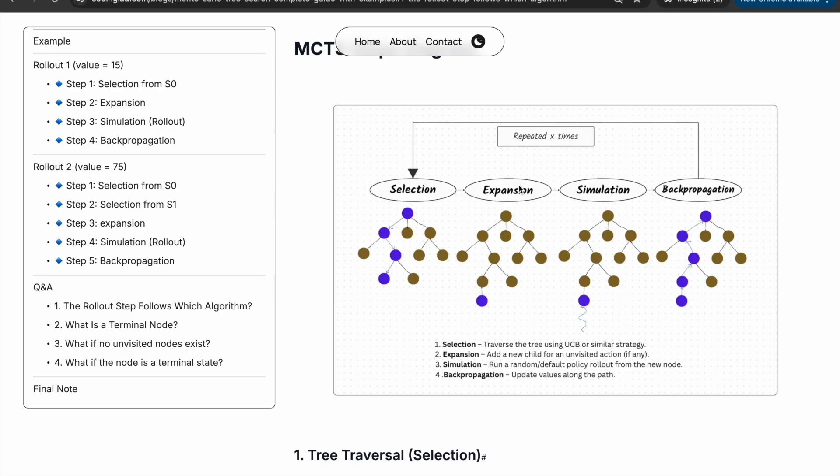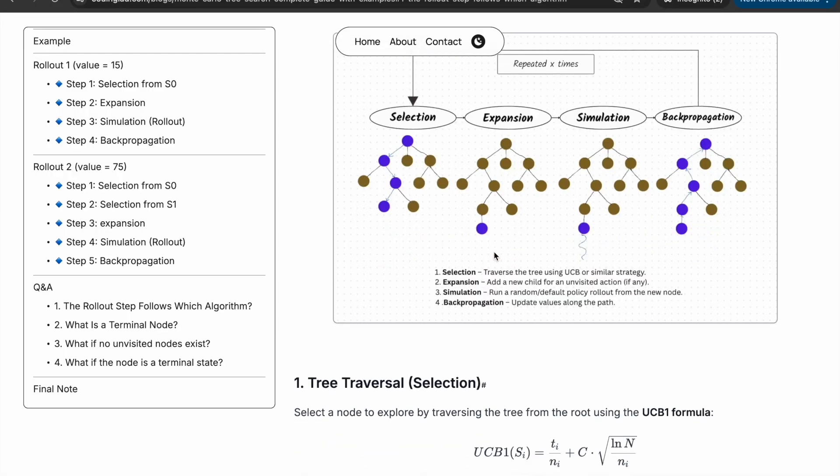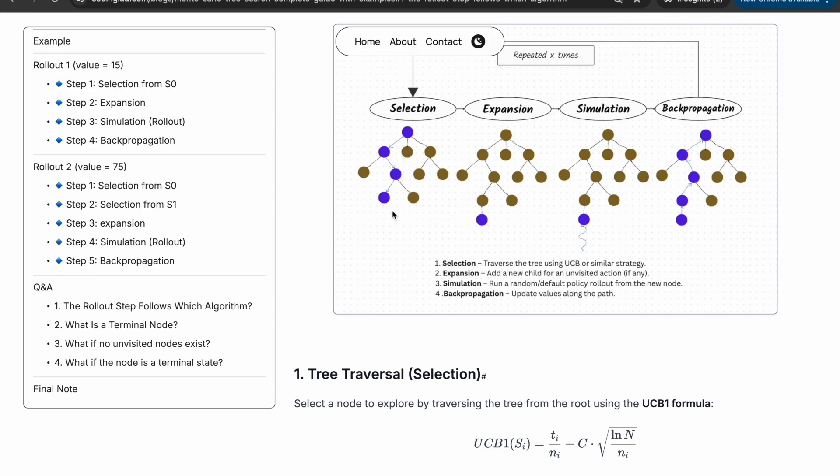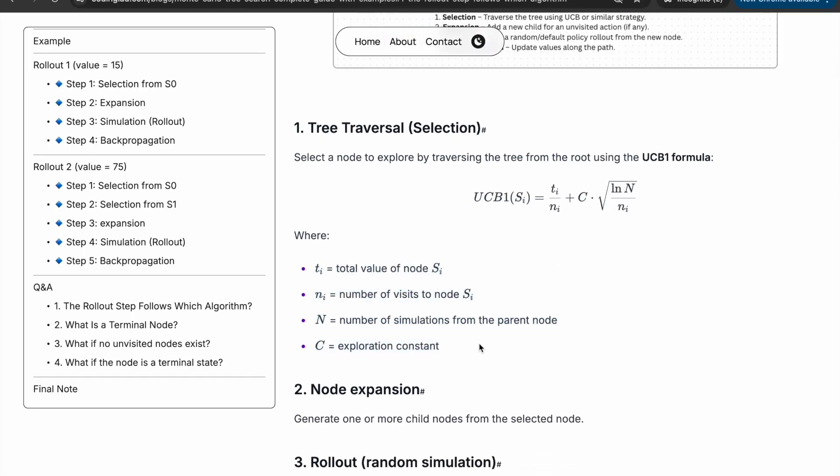The first step is selection. In the selection phase, we move from the root node down the tree, selecting child nodes one by one. This selection is guided by a formula called UCB1, or Upper Confidence Bound, which helps balance exploration and exploitation. We will dive into the UCB1 formula and its parameters shortly.